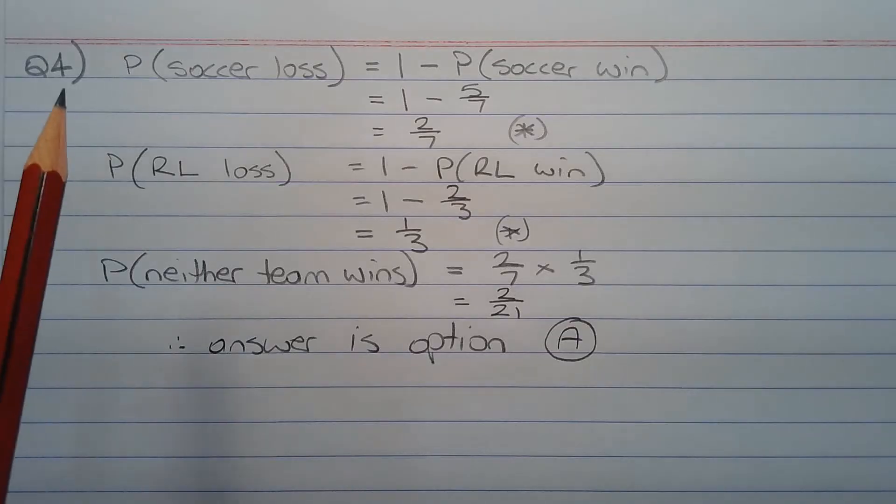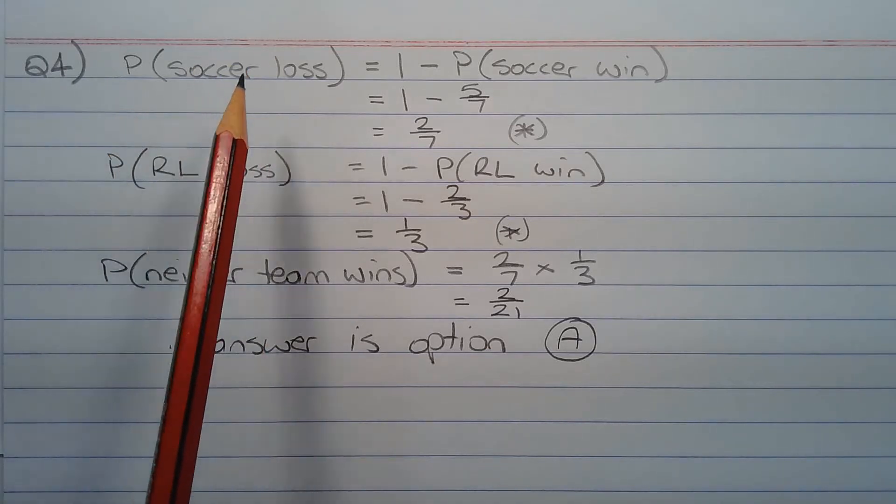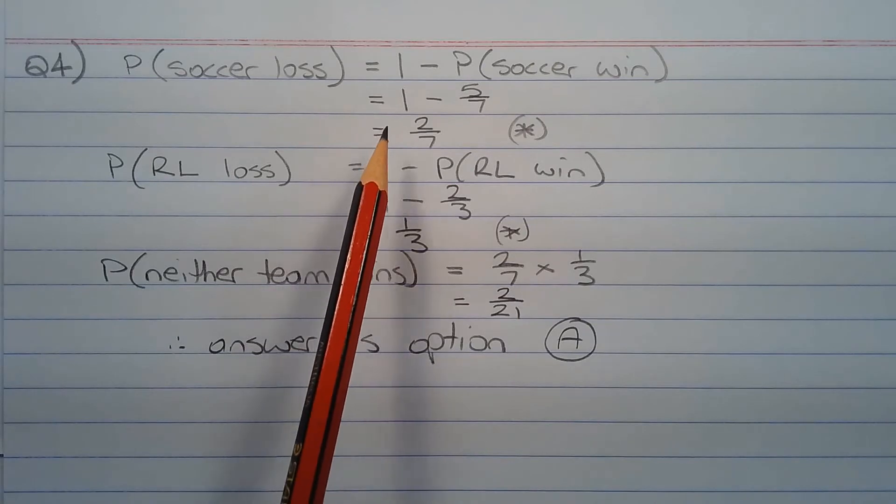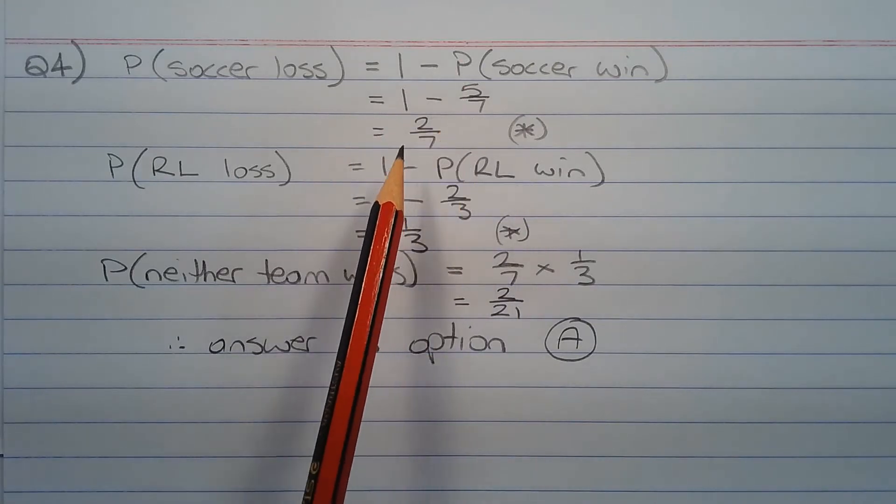Applying the theory of complements, the probability of losing a soccer game is equal to 1 minus the probability of winning a soccer game, which equals 1 minus 5 over 7, which equals 2 over 7.